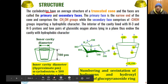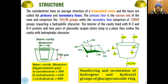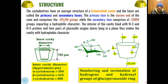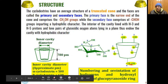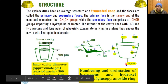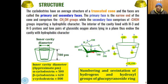Each cyclodextrin has a truncated cone structure where two faces are present — one is the primary face and the other is the secondary face. The narrow face is called the primary face and carries primary hydroxyl groups, specifically the CH₂OH group at carbon-6. The secondary OH groups at carbon-2 and carbon-3 are present on the secondary, wider face of the cyclodextrin.